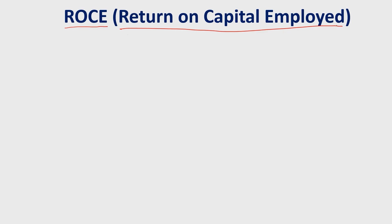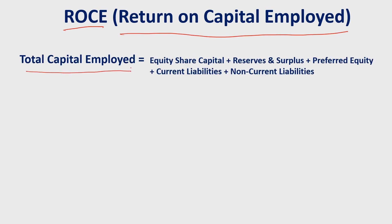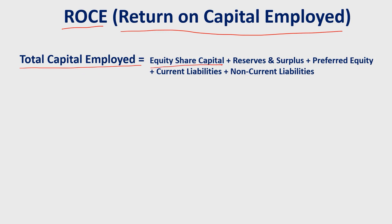That is why the challenge exists, as discussed in the last video. ROCE talks about total capital employed. Now, the components of total capital employed: first, equity share capital — the initial capital promoted by the company promoters. Second, reserves and surplus — this is the profit the company has saved. The profit after paying dividends to shareholders is retained as reserve and surplus.